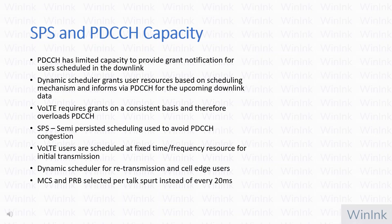In this slide we will cover SPS and PDCCH capacity. PDCCH has limited capacity in LTE to provide grant notifications for users scheduled in the downlink. The dynamic scheduler grants user resources based on the scheduling mechanism — whether fair, proportional fair, or any other — and informs via PDCCH for upcoming downlink data. Voice over LTE requires grants on a consistent basis and therefore overloads the PDCCH. SPS semi-persistent scheduling is used to avoid PDCCH congestion, scheduling VoLTE users at fixed time and frequency resources for initial transmissions, while the dynamic scheduler is used for retransmissions and cell edge users.